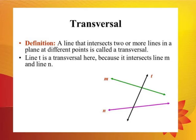Next, transversal: a line that intersects two or more lines in a plane at different points is called a transversal. Here in this figure, line T is intersecting line M and line N at different points. So line T is called a transversal because it intersects line M and line N at different points.